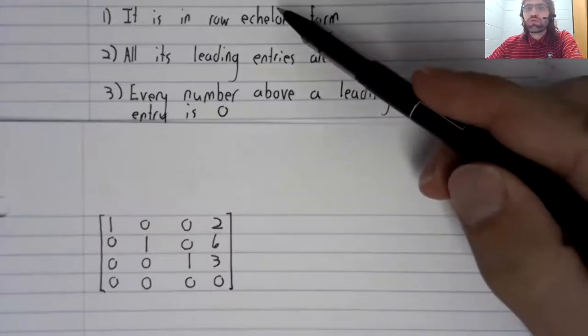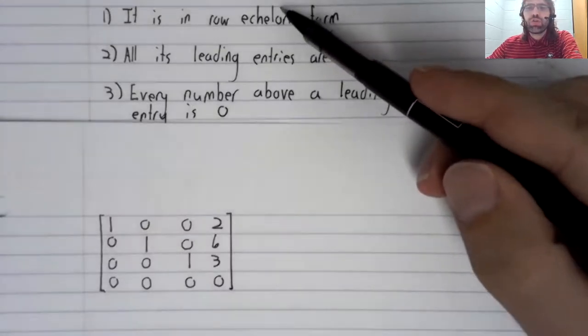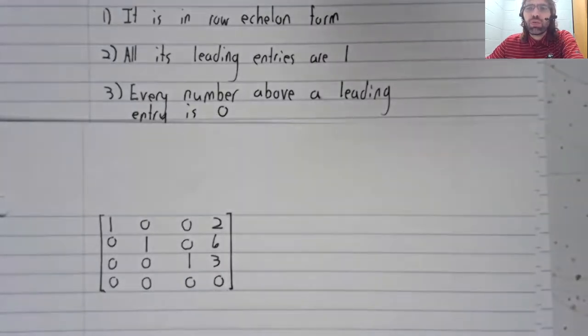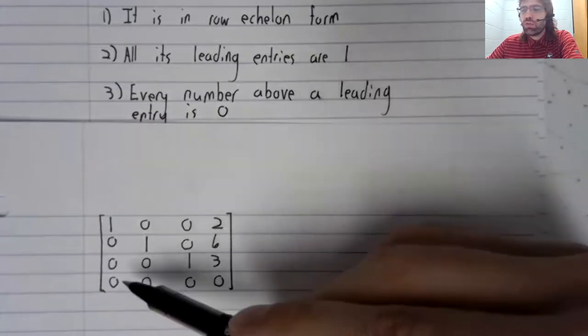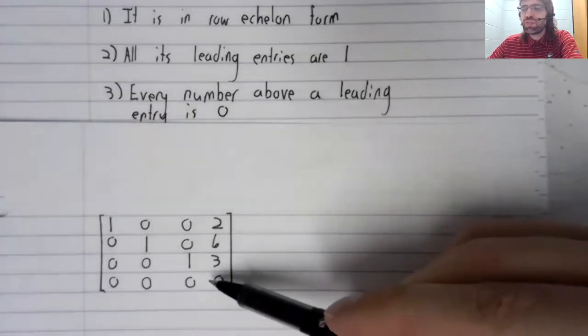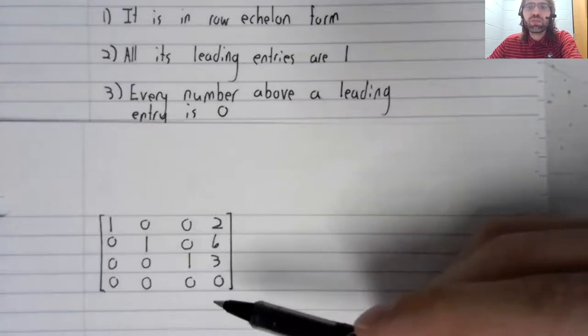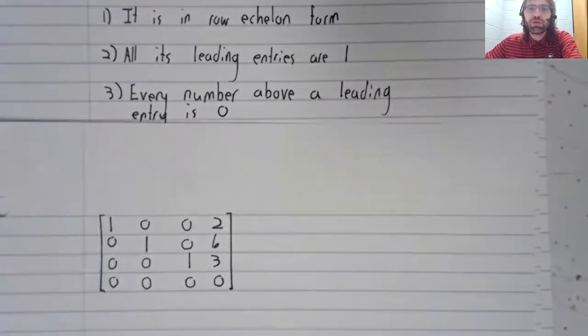Is it in row echelon form? To be in row echelon form, any row of all zeros, like this, has to be at the bottom of the matrix below any non-zero rows. That's true.